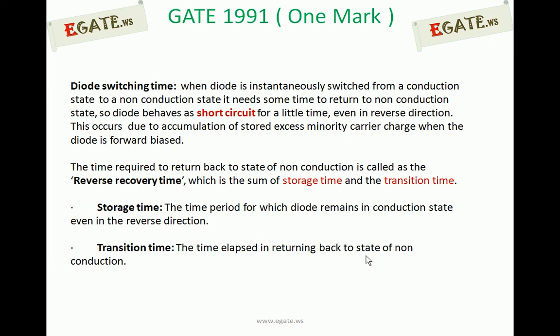Reverse recovery time is the time required to return back to the state of non-conduction — that is reverse bias — and it is the sum of storage time and transition time. Whenever a diode is switching from conduction state to non-conduction state, that is forward bias to reverse bias, it doesn't take place instantaneously. It requires some amount of time, called reverse recovery time, which is the sum of two different times: storage time and transition time.